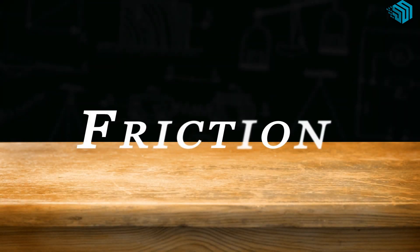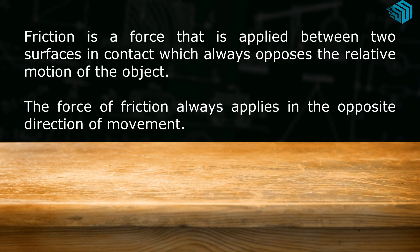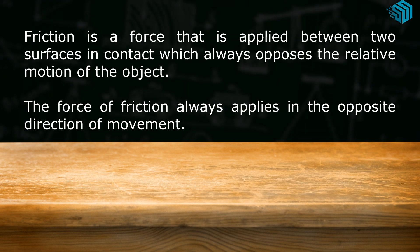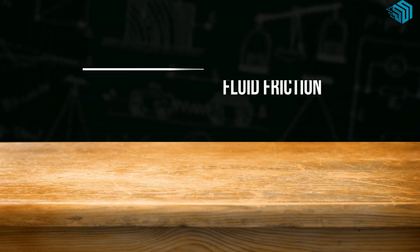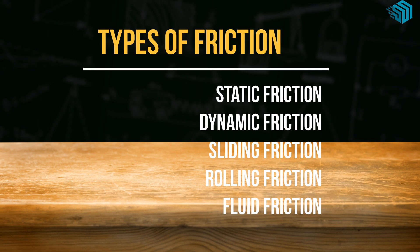Types of friction. Let us learn about friction. Friction is a force that is applied between two surfaces in contact, which always opposes the relative motion of the object. The force of friction always applies in the opposite direction of movement. Let us learn about different types of friction.